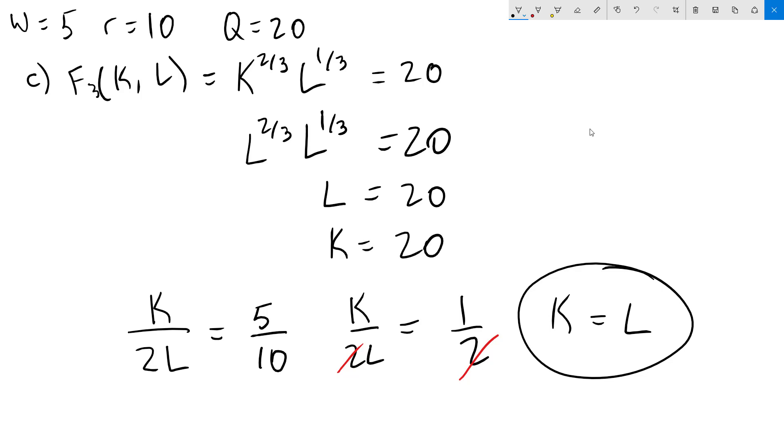And we've now completed this problem. We have gone through three different types of production functions, Linear, Leontief, and Cobb-Douglas, and solved for the cost minimizing quantities of labor and capital. If you have any questions, please let me know. Thanks for watching.